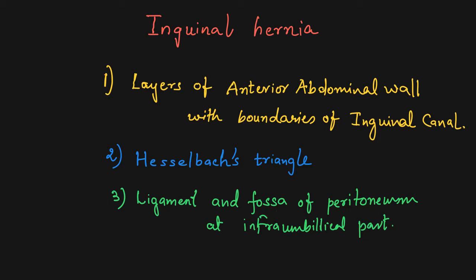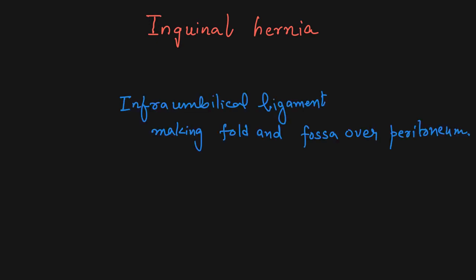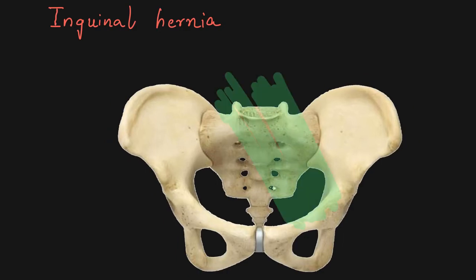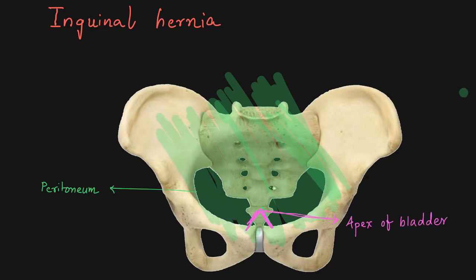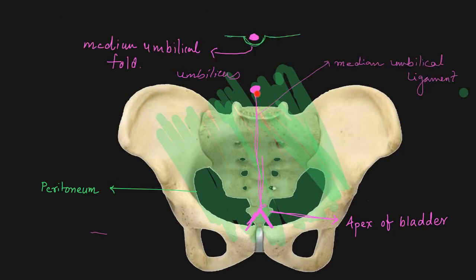We had already seen layers of the anterior abdominal wall and boundaries of the inguinal canal in my previous lecture, so we start with the infra-umbilical ligaments. Here this is the pelvis, and over this there is the deepest layer of the anterior abdominal wall, which is the peritoneum. Here is the bladder, showing you the apex of the bladder. The median umbilical ligament runs from the apex of the bladder to the umbilicus and gives you a fold over the peritoneum — that is the median umbilical fold of peritoneum.